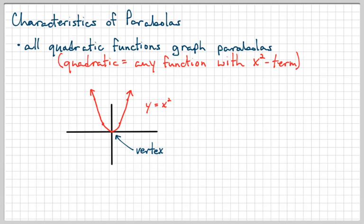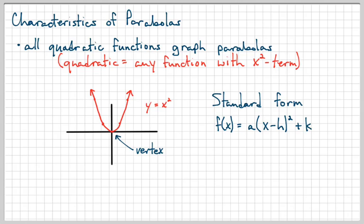This happens to be the graph of Y equals X squared. Now just like we did with lines and learned to recognize the slope-intercept form, there's a form with quadratic functions called the standard form: f of X equals A times X minus H squared plus K. These variables — A, H, and K — all mean something important to the graph.